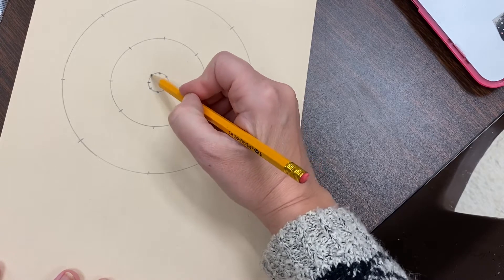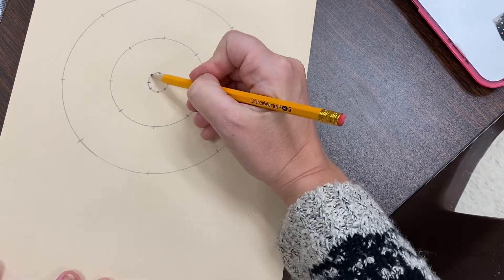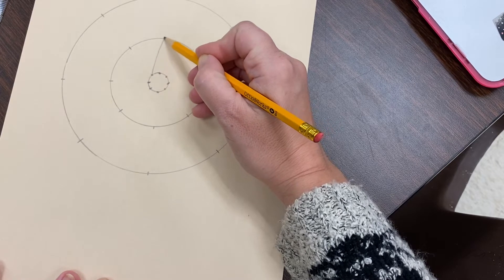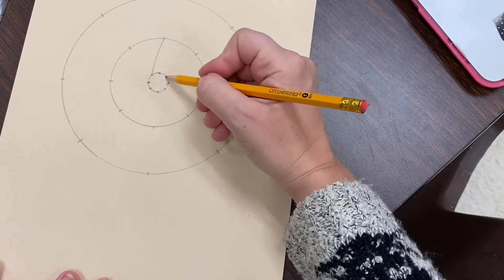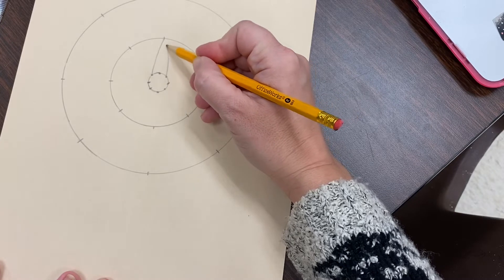So I'm going to take the next dot over and I'm going to draw a line and you can make it kind of a curved line too. And this dot, I'm going to draw a line.